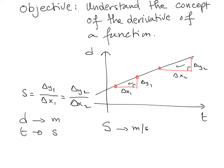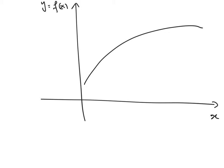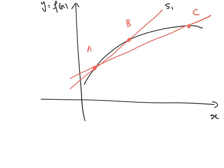The question we might ask now: what if the function is not a linear one? Let's consider the example of a function f of X. Take the first two points A and B, draw a line through them, and call the slope through A and B as S1. Now if instead of taking B I take another point C and draw the line through A and C, the slope will be S2, and the problem is S1 is not equal to S2. Visually we can see that the two slopes are not equal.